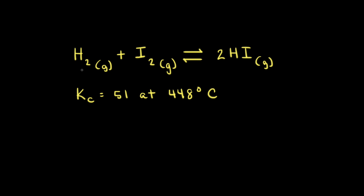For the reaction of hydrogen gas and iodine gas to form hydrogen iodide, the equilibrium constant Kc equals 51 at 448 degrees Celsius. Since the equilibrium constant is relatively close to 1, this means at equilibrium we have appreciable amounts of both our reactants and our products.